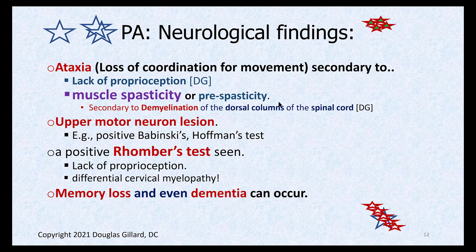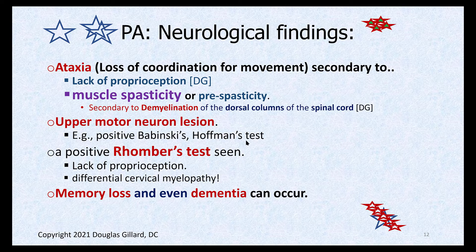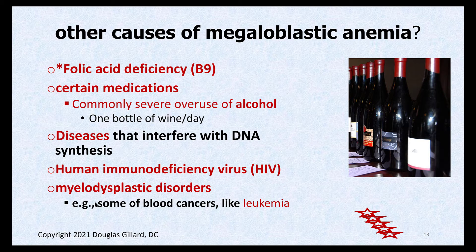More serious neurological findings can include ataxia — the patient is wobbly, has trouble walking especially with eyes closed, and may have a wide gait. Muscle testing may reveal spasticity. Upper motor neuron signs can appear: Babinski's sign, Hoffman's test, and Romberg's test may all be positive. Toward end stages, pernicious anemia can cause dementia and memory loss.